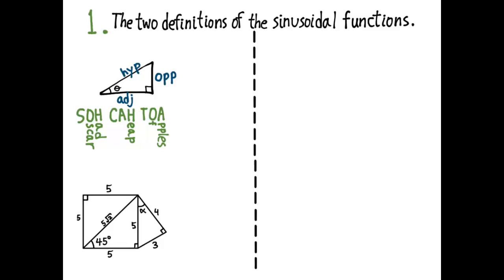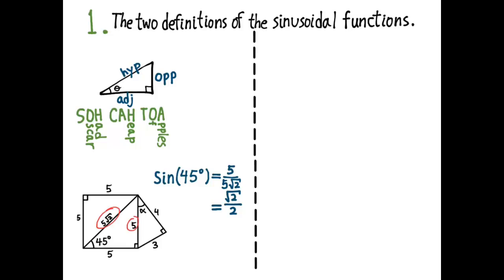For example, in this diagram, suppose you want to find the sine of 45 degrees. Sine is opposite over hypotenuse — the opposite is 5, so we put 5 in the numerator, and the hypotenuse is 5√2, so we put 5√2 in the denominator. We get the simplified answer: sine of 45 degrees is √2 over 2. Or if we want to find the cosine of alpha, cosine is adjacent over hypotenuse — the adjacent leg is 4 and the hypotenuse is 5, so the cosine of alpha is 4/5.